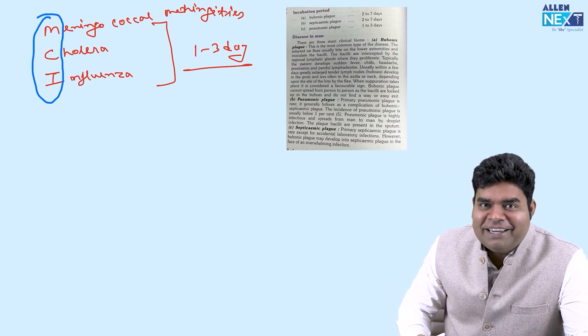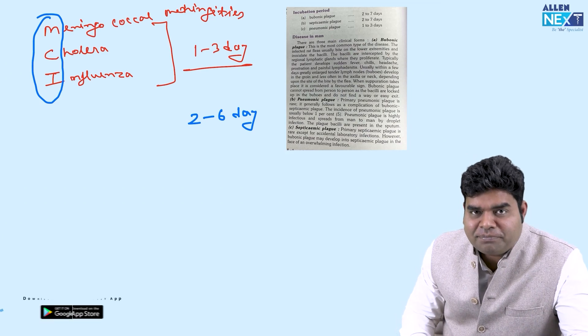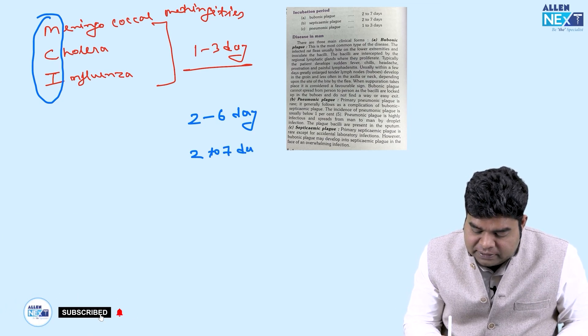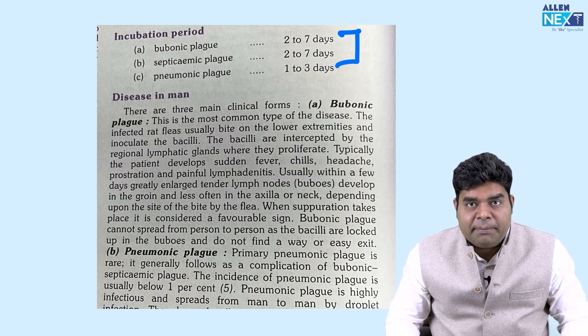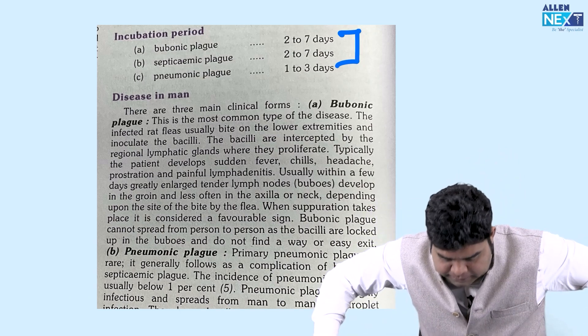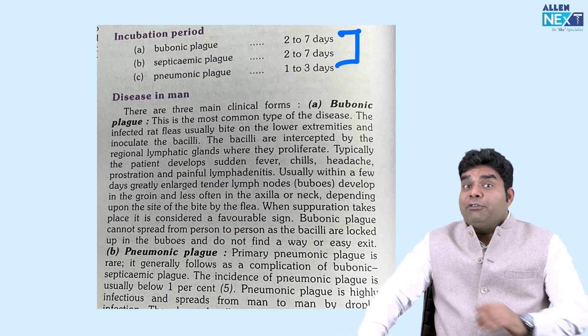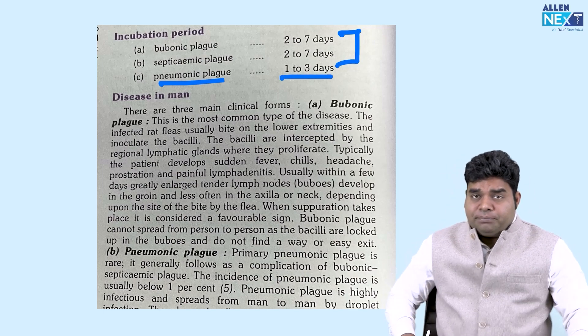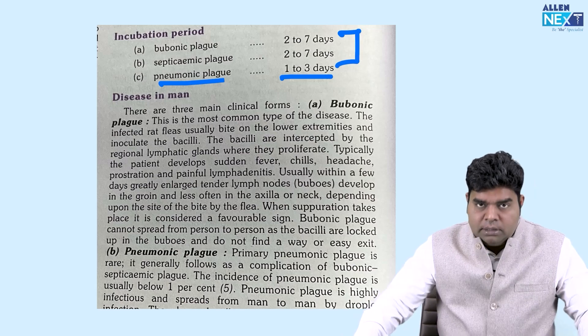Now if you double 1 to 3 it will become 2 to 6 and this is the period for diphtheria. Then 2 to 7 is the period for plague. You can see it, it is written here plague is of 3 types: bubonic, septicemic and pneumonic. Bubonic means plague of course caused by Yersinia pestis is in the lymph node. Bubbo means lymph node, then from the lymph node it goes to lung and spreads to the body, that is known as pneumonic plague.